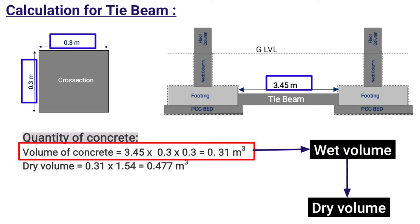As I have already shown you in my previous lectures, dry volume is equal to wet volume times conversion factor 1.54. Wet volume is already calculated as 0.31 meter cube. So dry volume will be equal to 0.31 times 1.54, which will be equal to 0.477 meter cube.